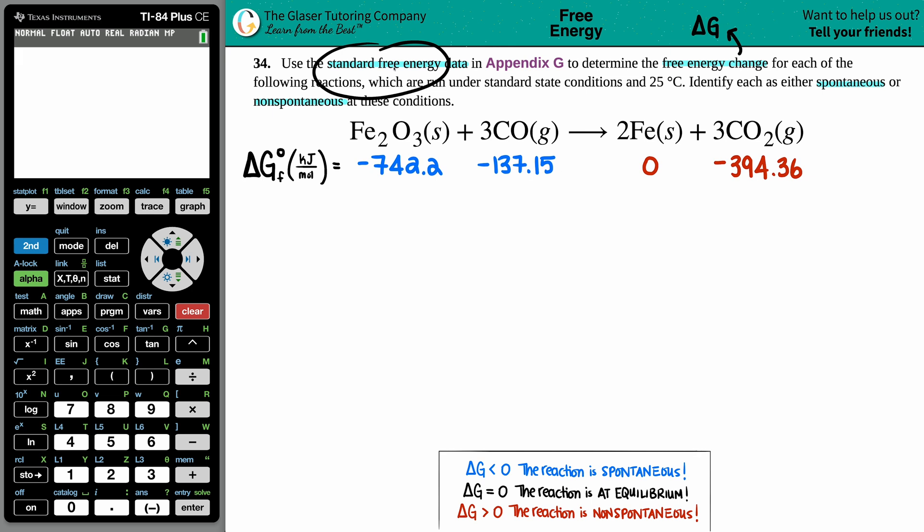Since we're using standard free energy—the standard values in the back of a book, in this case Appendix G—we're solving for delta G naught. Anytime you have that naught value, that means we're dealing with standard textbook values. So I went to the back of the textbook to find the delta G's for each individual component.